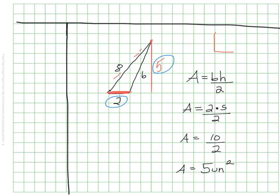Again, this 6 and this 8, while useful for finding perimeter, have nothing to do with finding the area, because neither of those are the height, nor are they the base.